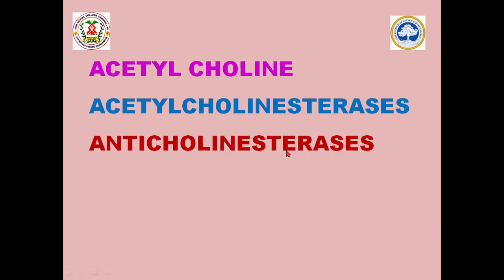What is an anticholinesterase? Anticholinesterases are chemicals that tend to have an inhibitory effect on acetylcholinesterase. So if this enzyme is inhibited, naturally the concentration of acetylcholine will be increased, and we will get uncontrolled cholinergic activity.